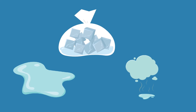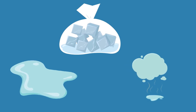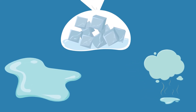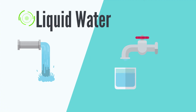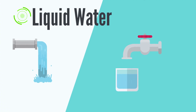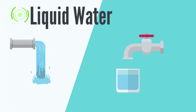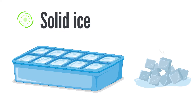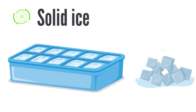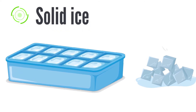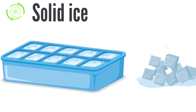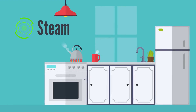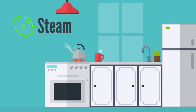So, let's review. Water has three forms. The first is liquid water that we drink. Then, a solid form of water, which is ice. And the third form of water is steam.